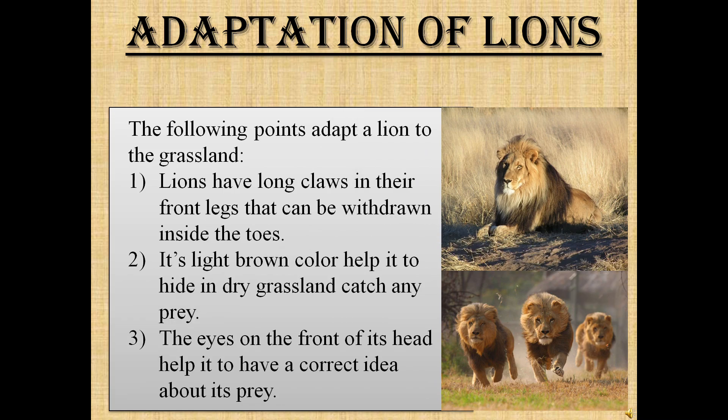Adaptation of lions. First, lions have long claws in their front legs that can be withdrawn inside the toes. Second, their light brown color helps them hide in dry grassland to catch any prey. Third, the eyes on the front of their head help them have a correct idea about the location of their prey.